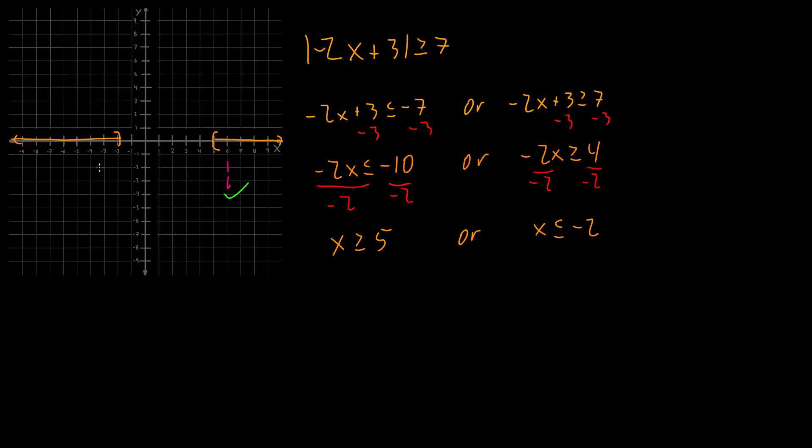And then for this one, we'll do negative 4. Why not? Negative 2 times negative 4 is positive 8. Positive 8 plus 3 gets you 11. That is greater than 7. So this also checks out.